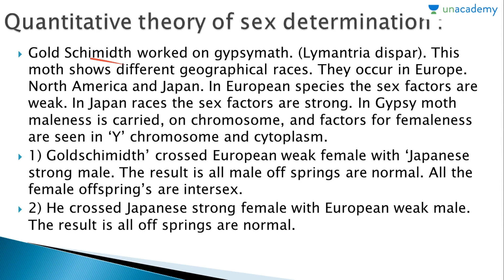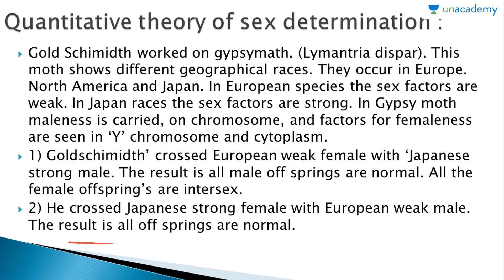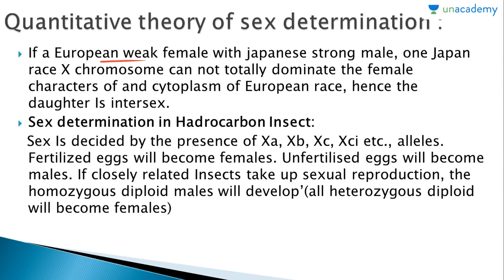Goldschmidt worked on the gypsy moth (Lymantria dispar), which shows different geographical races in Europe, North America, and Japan. In European species, sex factors are weak; in Japanese races, sex factors are strong. Maleness is carried on chromosomes and femaleness factors are in the Y chromosome and cytoplasm. When Goldschmidt crossed European weak females with Japanese strong males, all male offspring were normal but all female offspring were intersex.